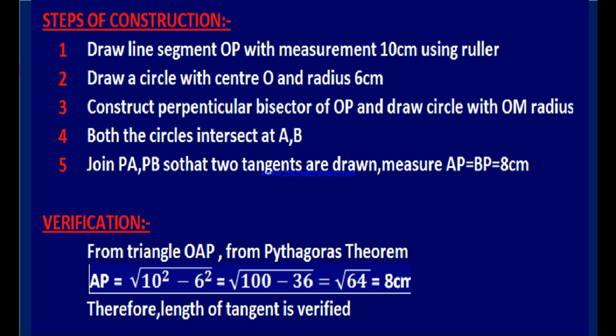From the triangle OAP using Pythagoras theorem, the length of the tangent AP is given by root over D² minus R². D is the distance between the center of the circle to the external point; here it is 10. And R is the radius; in this case R is equal to 6. Therefore, D² minus R² means 10² minus 6² = root over (100 minus 36) = root over 64 = 8 cm. From the construction, using the scale, we measured the length of the tangent as 8 cm, and from the calculation also we got AP = 8 cm. Therefore, the length of the tangent is verified.